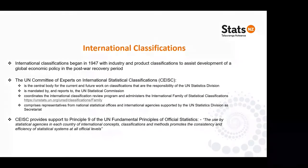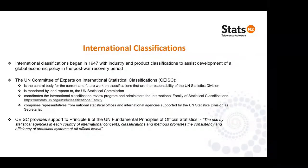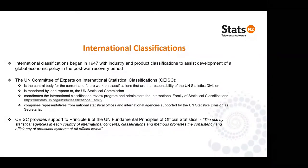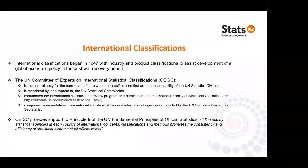International classifications really came around in 1947 with the creation of the United Nations and the Statistics Division, which set up an expert group to develop industry and product classifications to help with global economic policy in the post-war recovery period. That expert group continued its work for about the next 50–55 years, updating classifications to reflect changes in industry activities and the range of products that became available through changes in technology.